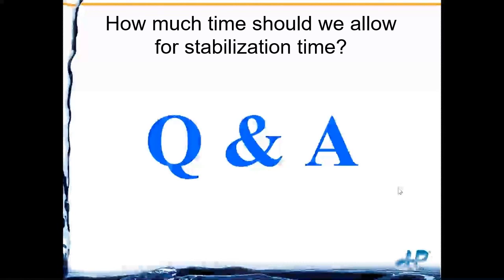Question: how much time should we allow for stabilization? If you've cleaned with something strongly oxidizing or strongly reducing, a 30-minute window is a good rule of thumb. After that, placing it in your ORP solution should only require 2 to 5 minutes. If it's taking longer, you probably need to clean it — ORP calibrations should be much quicker than pH because it's just a piece of metal.